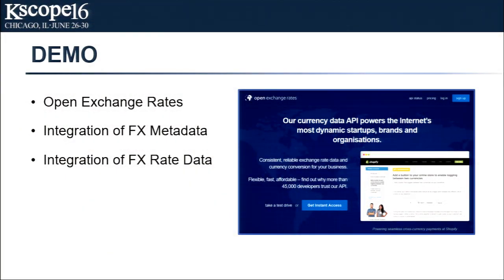The website we're going to be talking to today is called Open Exchange Rates. A lot of our applications use foreign exchange rates. For 12 bucks a month you can get 10,000 requests, which as a developer is more than enough. You can get historical rates, current rates, and rate metadata — names and descriptions. They have a really well-documented API where they tell you exactly how to talk to them. But it's literally one of thousands of websites you can go hit.